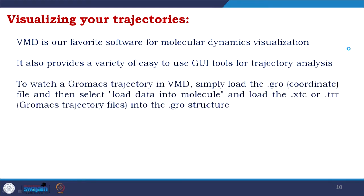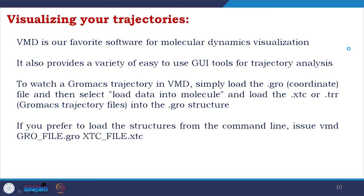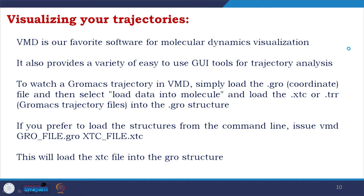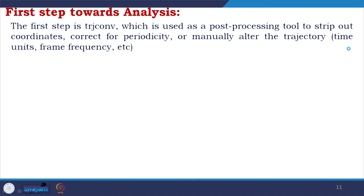To watch a GROMACS trajectory in VMD, first you load the .gro file, then select 'load data into molecule' and load the .xtc or .trr file. I prefer .xtc because of the reduced file size. You can also load from the command line: issue 'vmd gro_file.gro xtc_file.xtc' and this will load the .xtc file into the .gro structure automatically so you will see the outcome of the trajectory.